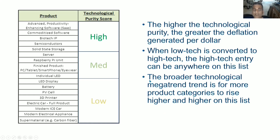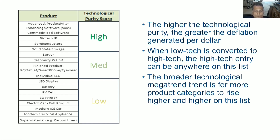The broader technological mega-trend is for more product categories to rise higher and higher on this list. For example, batteries were improving at a very slow rate, but the battery revolution and the EV revolution have made batteries improve faster. When I calculate the percentage of the economy that's high tech, I take a weighted average of how high a product category scores in technological purity, using some proprietary calculations I'm not disclosing here, and then look at the worldwide revenue of each industry on this list.